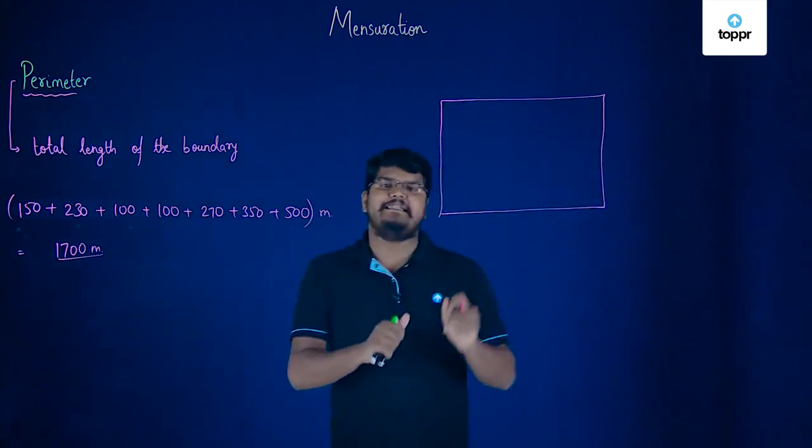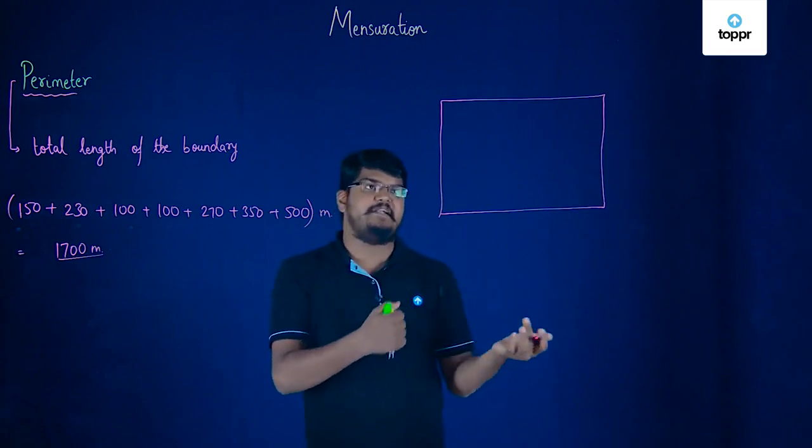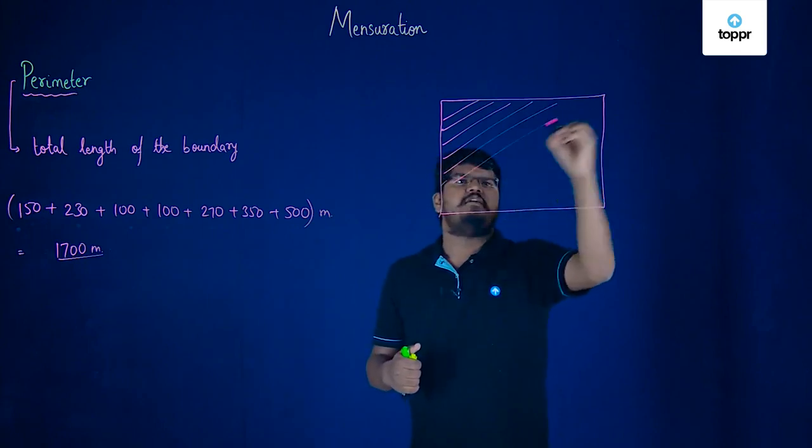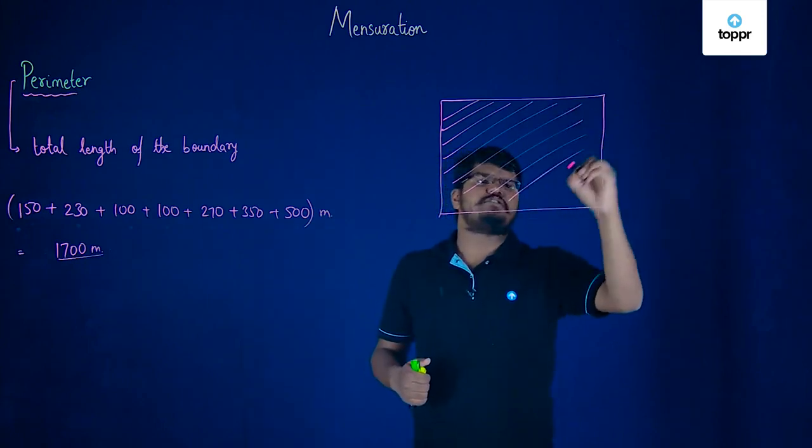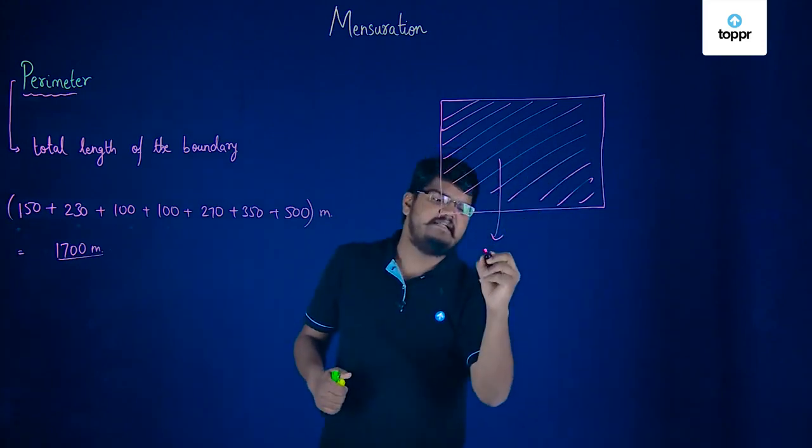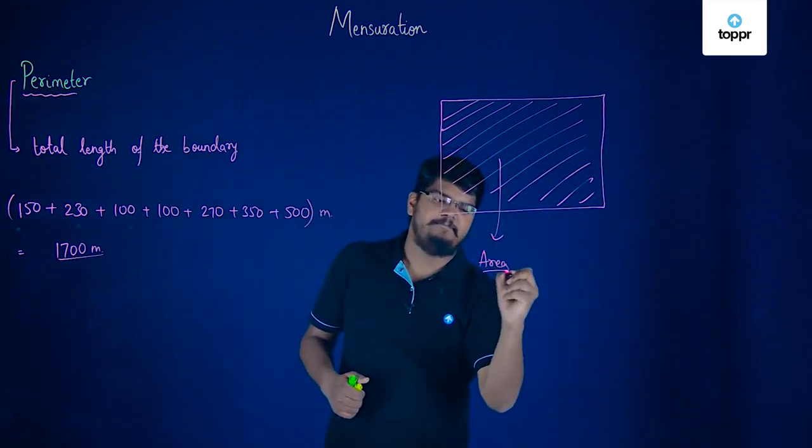So, by calculating the length of these boundaries, we'll be able to find the perimeter and at the same time, if I now just talk about this particular surface which is enclosed inside it, then this particular surface which is enclosed inside it is called its area.